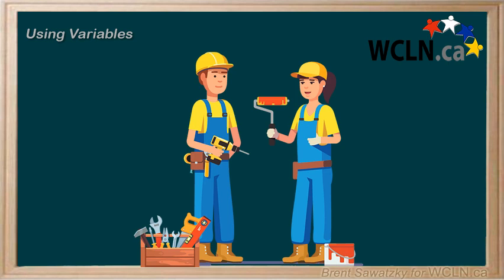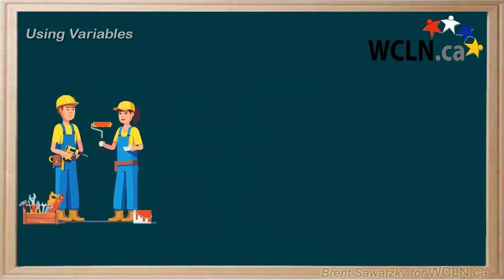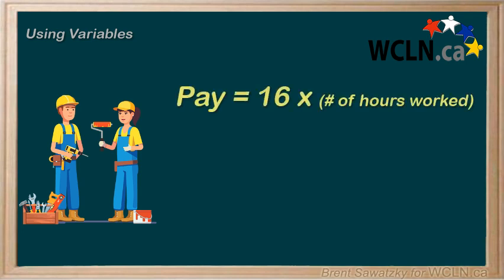If I work two hours, then I get paid 16 times 2, or $32. If I work three hours, then I get paid 16 times 3, or $48. And on and on. Being smart, you figure out that you could just clarify this relationship with a simple equation — my pay equals 16 times the number of hours worked.